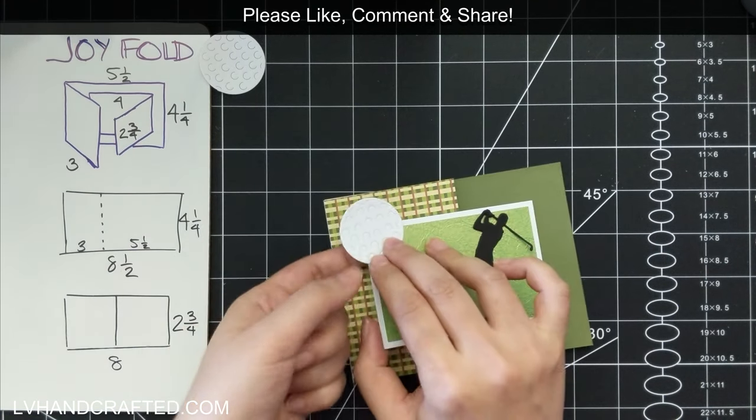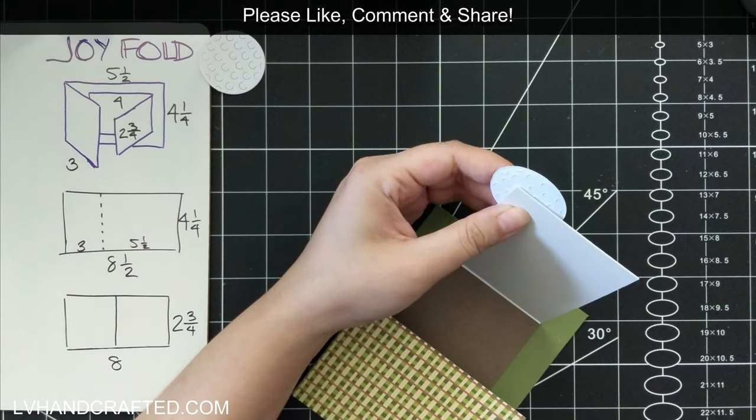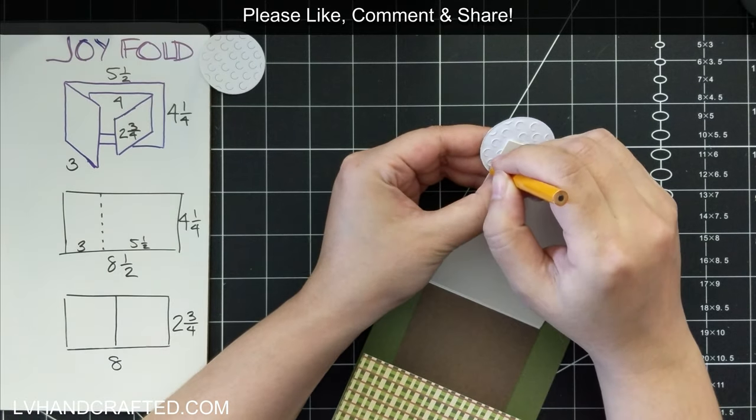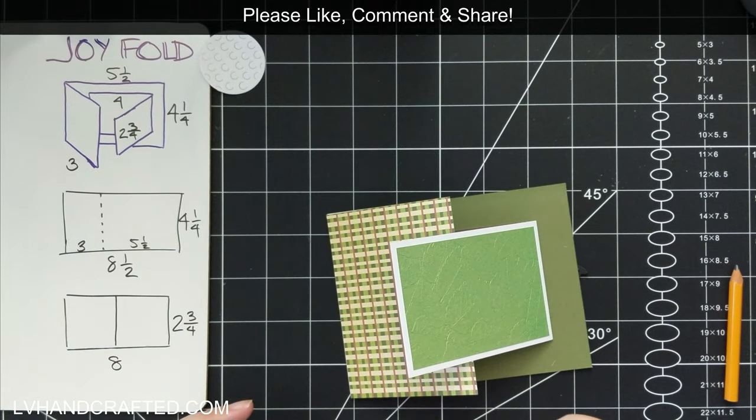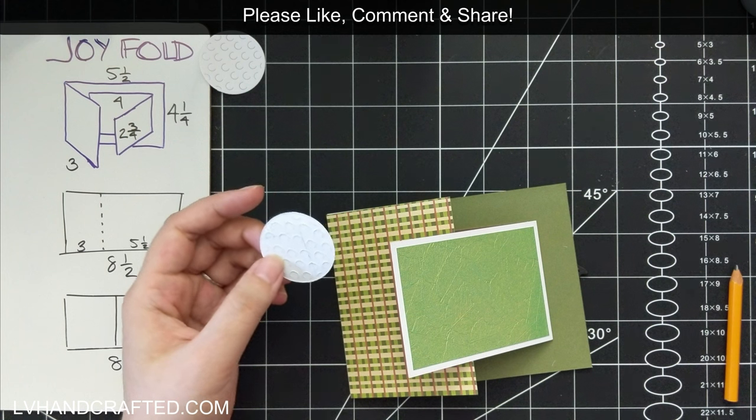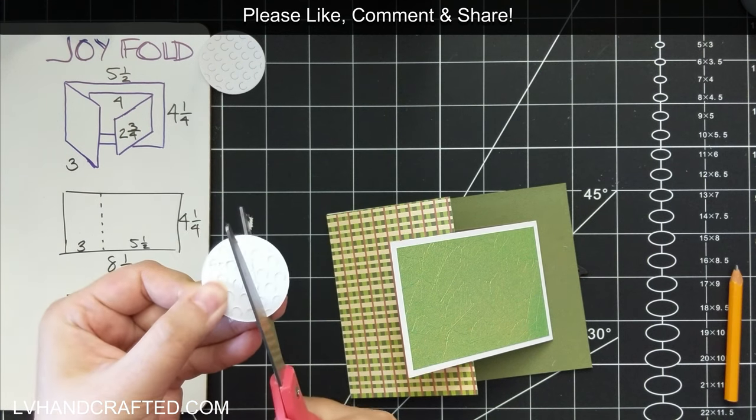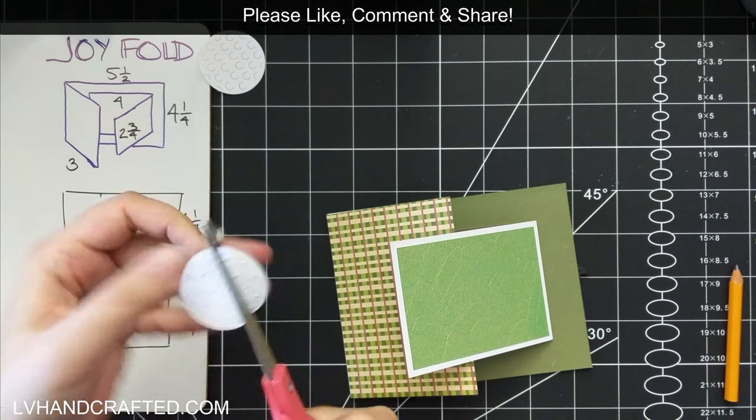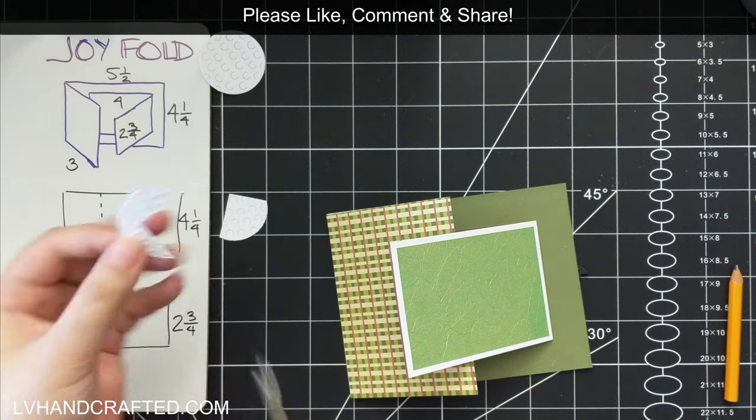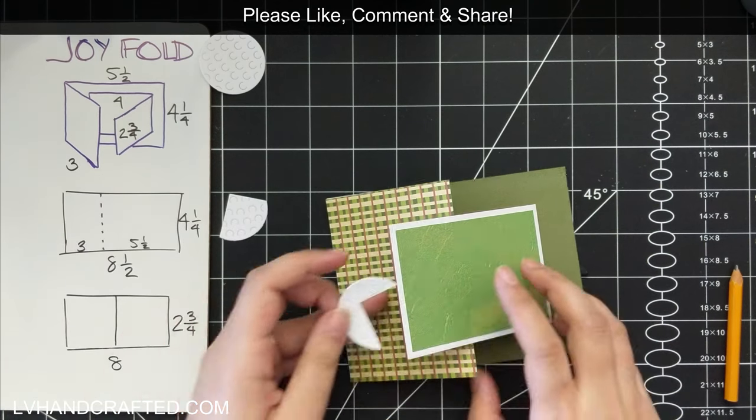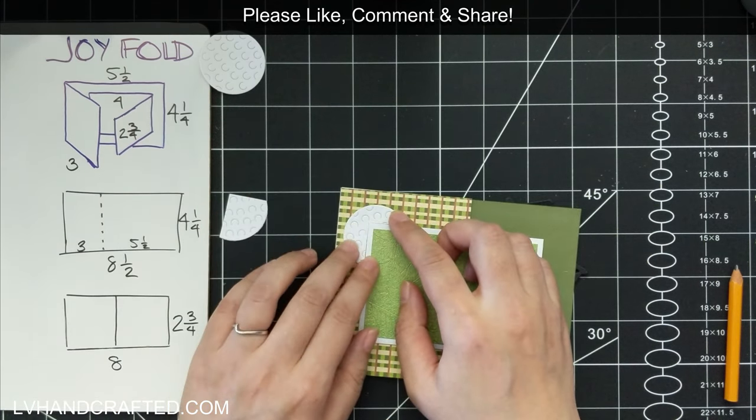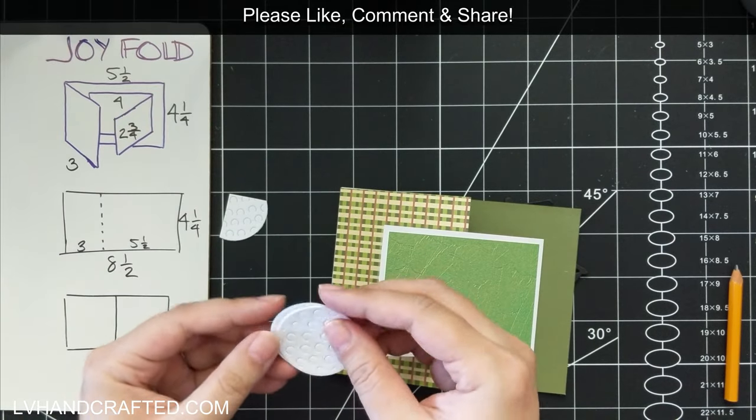And so here are some additional die cuts from the baseball and golf collection. This is a golf ball that I've cut out three times, actually. Once, this one here has been cut from 120 pound, so it sort of matches the thickness of the card base.